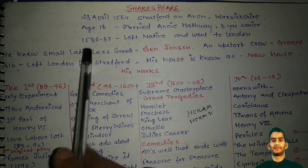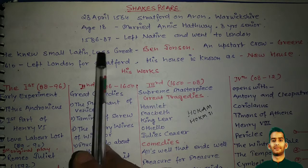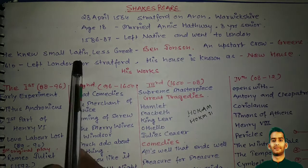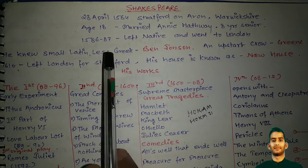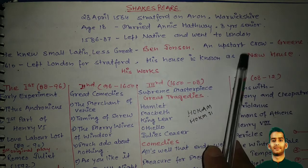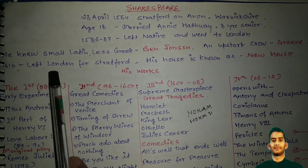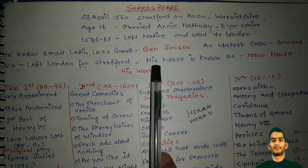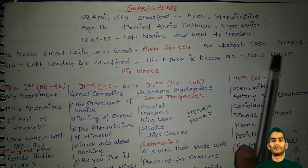Here are some quotations written about him. Ben Jonson said he knew small Latin and less Greek. Robert Greene called him an upstart crow. In 1610, he left London for Stratford-upon-Avon and his house is known as New Place.